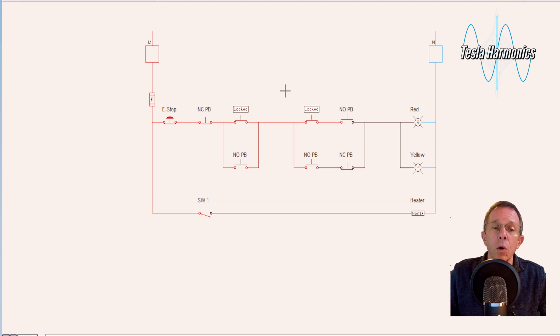All of the inputs can be wired in series, series parallel, however we want to wire them. But because of voltage drops, we don't put the outputs in series. We put them in parallel or we put them on a separate rung where the heater is, and I can turn it on and off the same way.